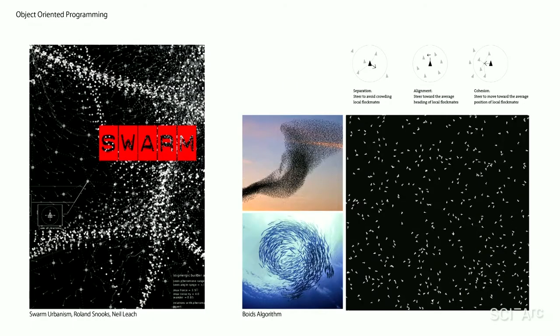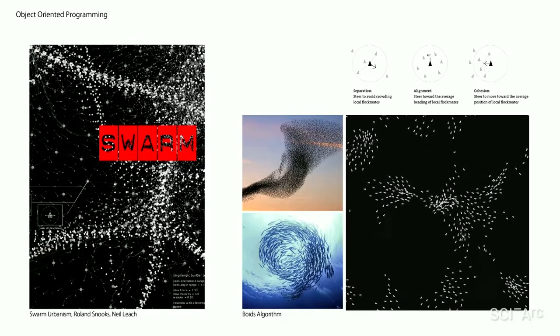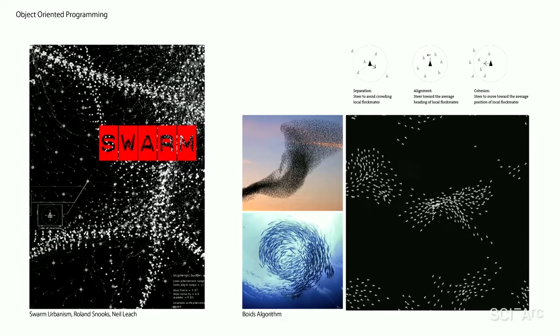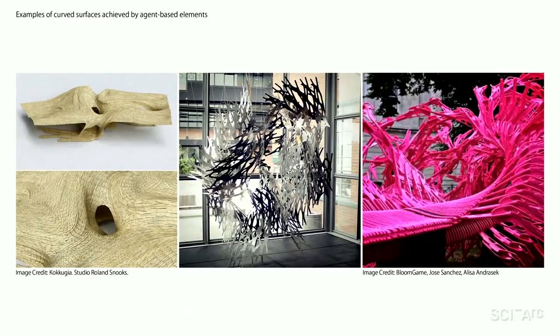The introduction of multi-agent systems seems to be the solution to this, allowed by the introduction of object-oriented programming. This allowed us to reinterpret complex geometries as accumulation of self-similar elements — namely agents — which here I will argue as discrete. Works shown here are good examples of the use of multi-agent systems, using simple elements to create global complexity.